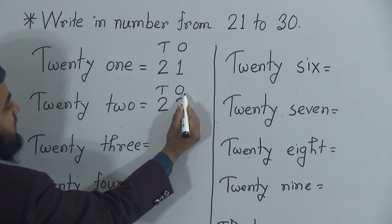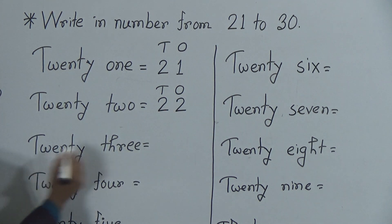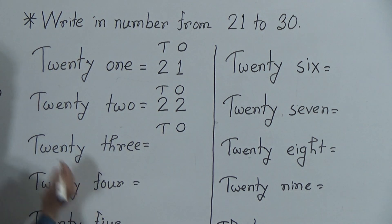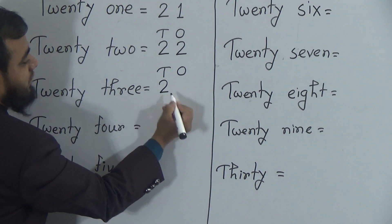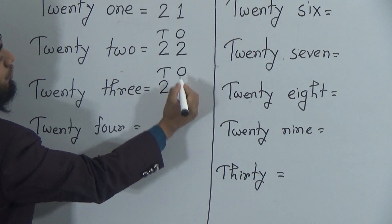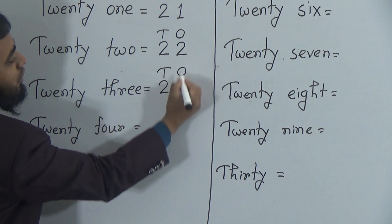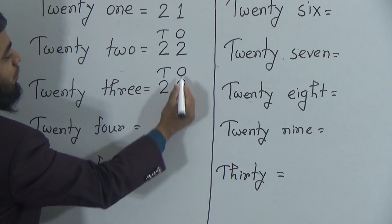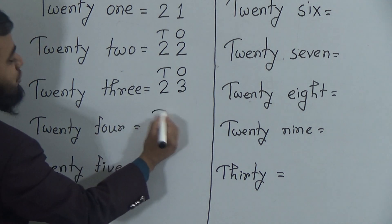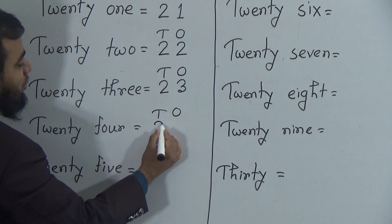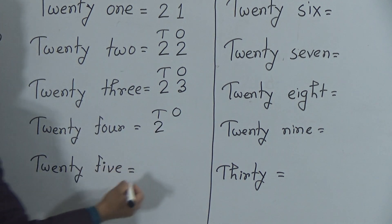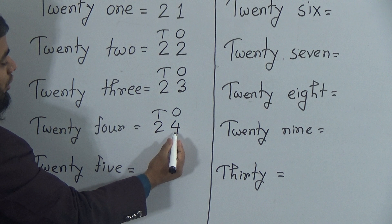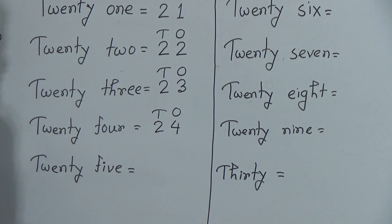The next number is twenty-three. To write it down, we need two in the tens position and three in the ones position, because three comes after two. Two and three makes twenty-three — two tens and three ones makes twenty-three. Next is twenty-four: two stays in the tens position and the ones position is now four, because four comes after three. Two and four makes twenty-four.